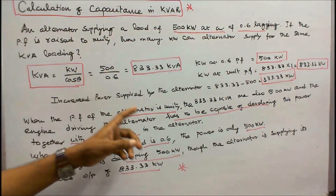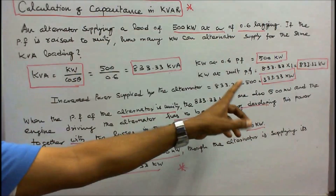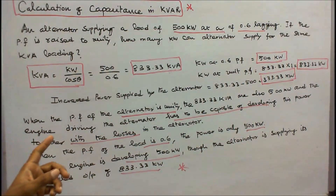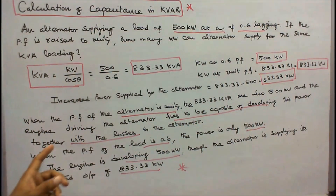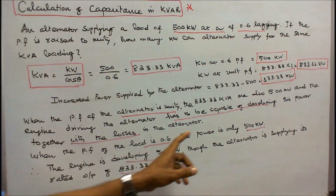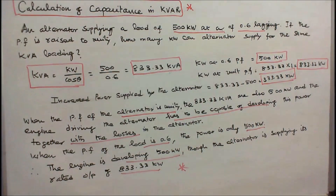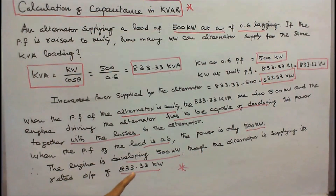When the power factor of the alternator is unity, the 833.33 KVA are also 833.33 kilowatts, and the engine driving the alternator has to be capable of developing this power together with the losses in the alternator. When the power factor of the load is 0.6, the power is only 500 kilowatts, so the engine is developing only 500 kilowatts, even though the alternator is supplying its rated output of 833.33 KVA. This is the importance of power factor improvement. With this, I conclude my lecture — thanks for listening.